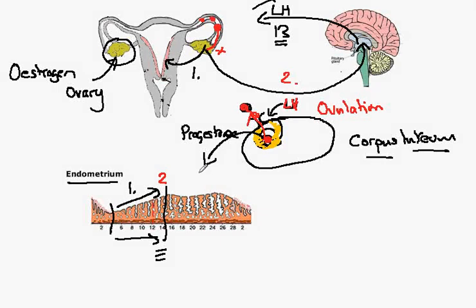Progesterone travels through the bloodstream to the lining of the uterus to give us effect number three, and that is to maintain the lining of the uterus. It prevents the lining of the uterus from breaking down. In this condition, it is possible that a fertilized egg could implant into the wall here and develop into a pregnancy. However, if this does not occur, if there is no implantation of a fertilized egg, the corpus luteum breaks down and progesterone levels fall.